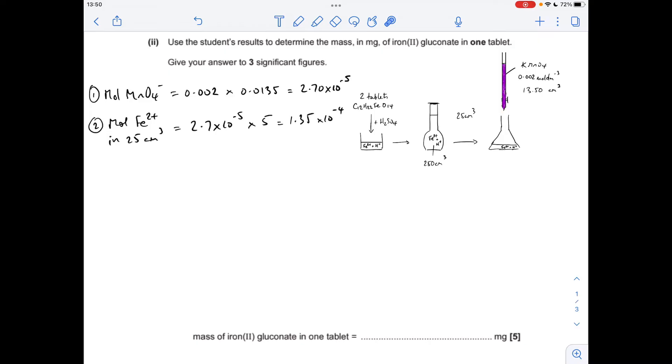So applying the mole ratio, the moles of Fe2+ in the 25 cm cubed using the titration is just the moles of MnO4- times 5 so we get that many.